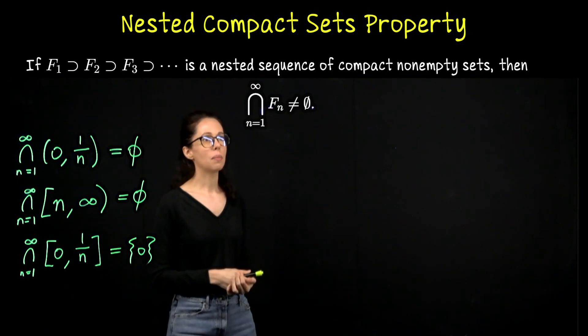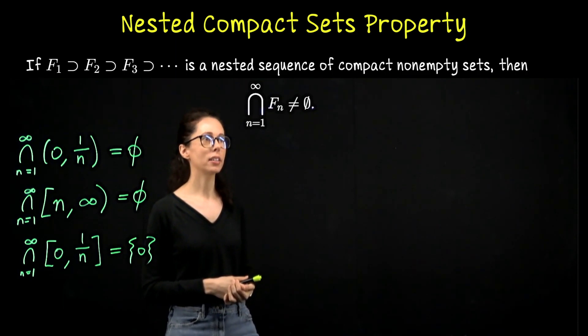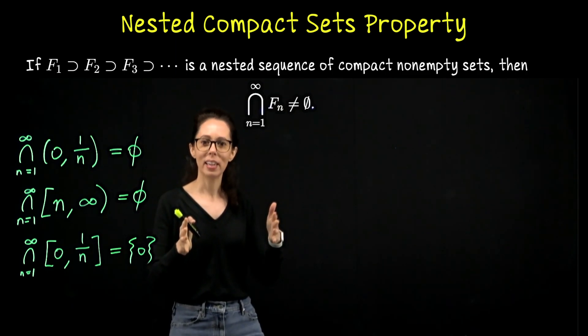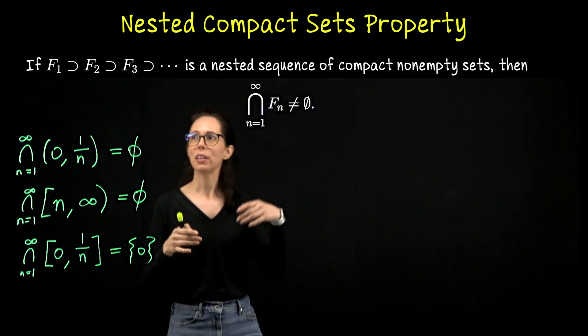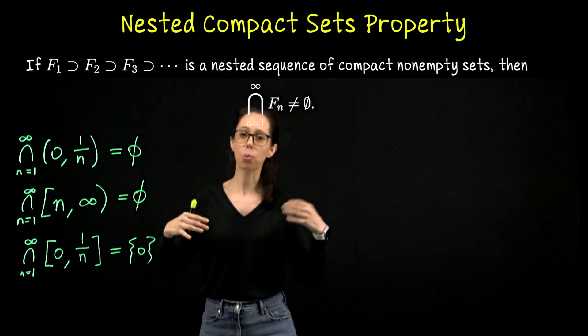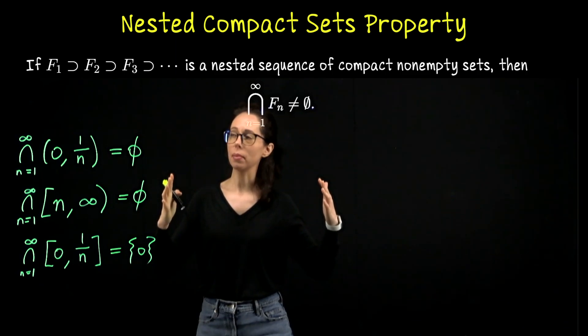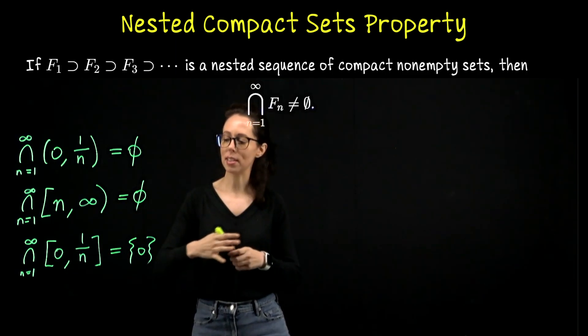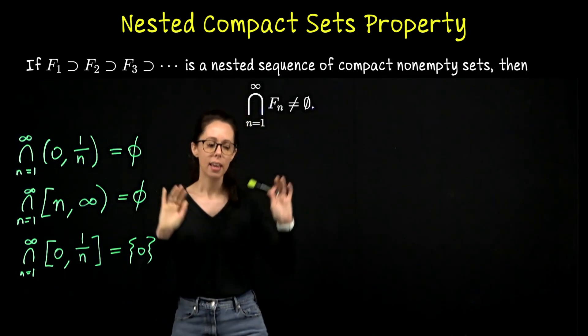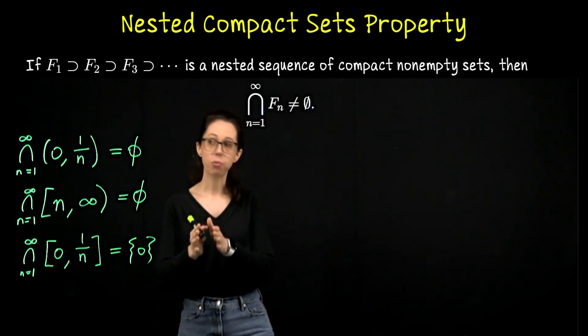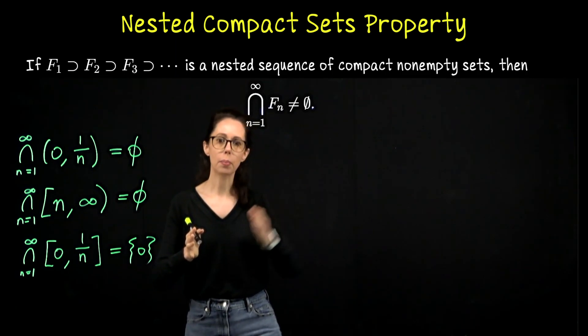Looking at this theorem, it's not required that these sets are strictly included. So I might use this subset notation here, but I don't mean that every set is a proper subset. So maybe F₂ is the same as F₃ and maybe they aren't shrinking quite as much as this example. But that doesn't matter. What we're saying is if you have any family of compact sets.